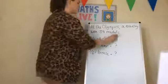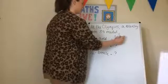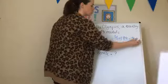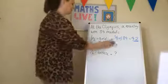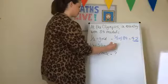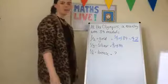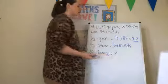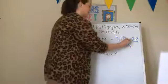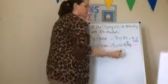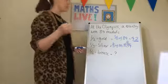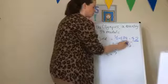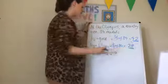We're finding half of 84: divide 84 by 2 — half of 8 is 4, half of 4 is 2 — so they won 42 gold medals. Amazing. Next, finding one-third: we need to find one-third of 84. Our three times tables don't go up to 84, so let's do short division with 3. 84 divided by 3: how many 3s in 8? Two, carry the 2 to make 24. 24 divided by 3 is 8. So one-third of 84 is 28 silvers.